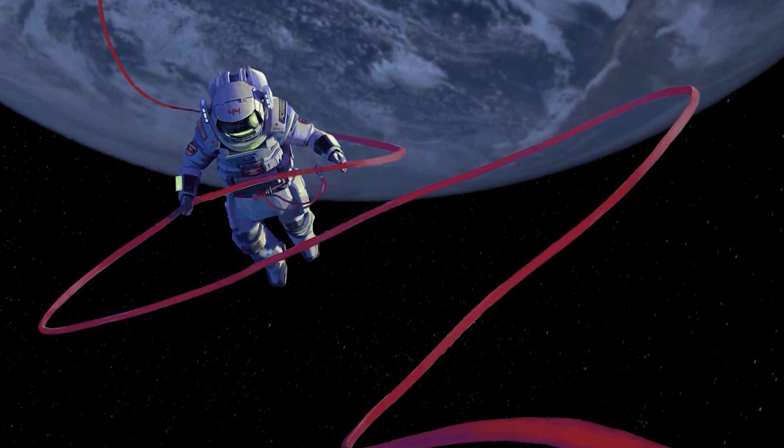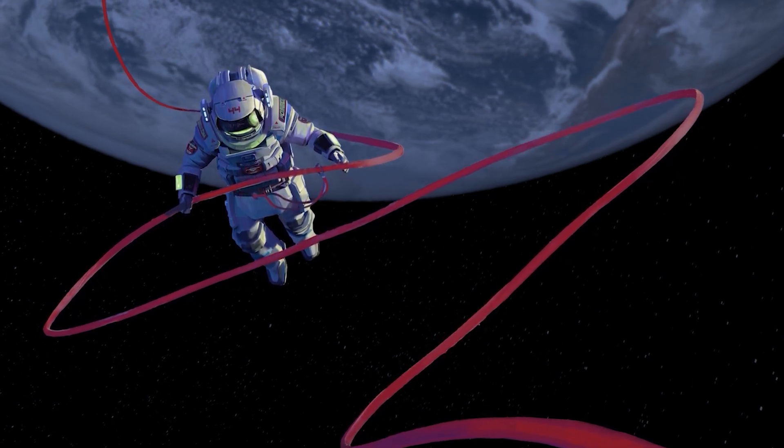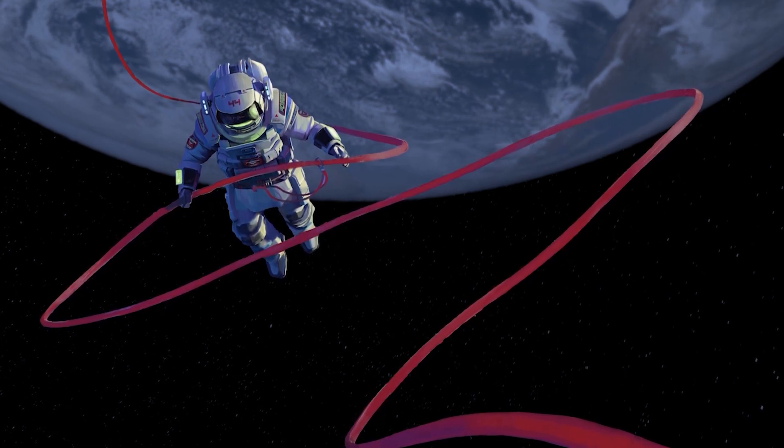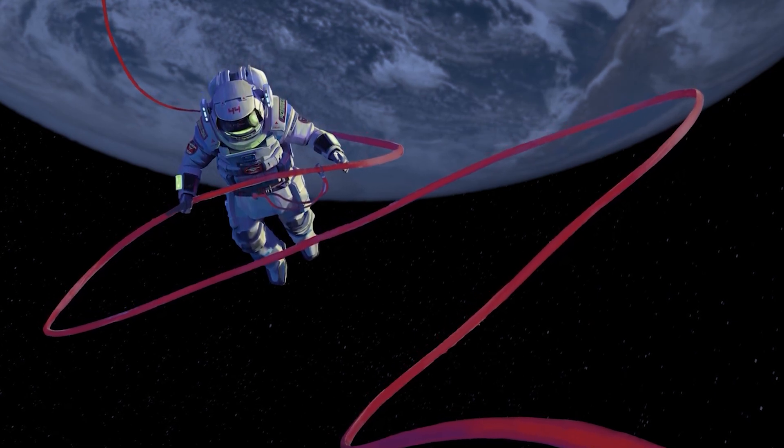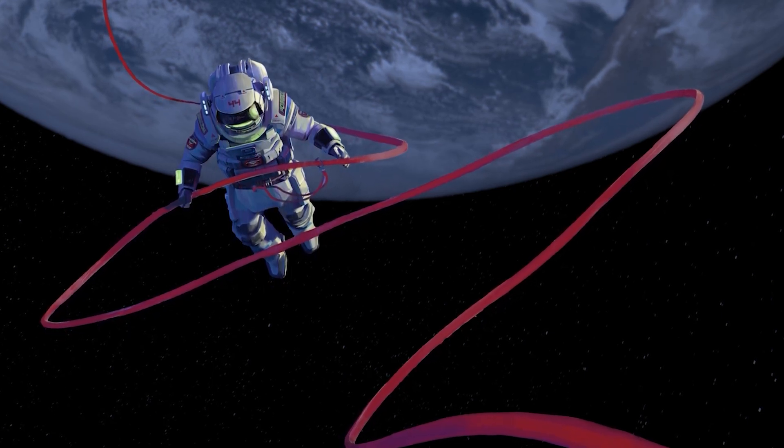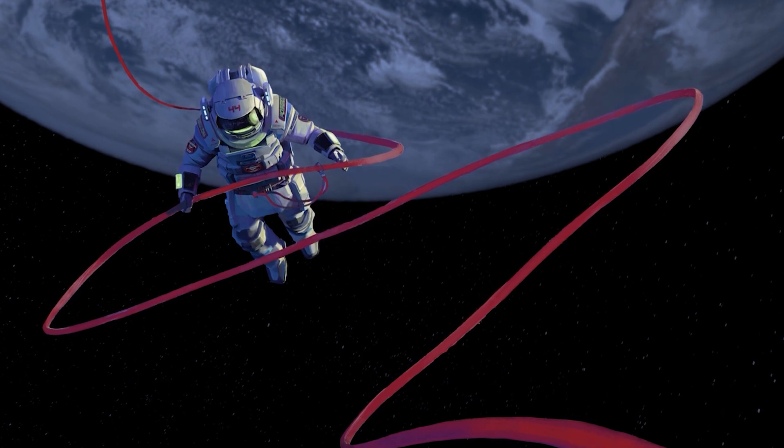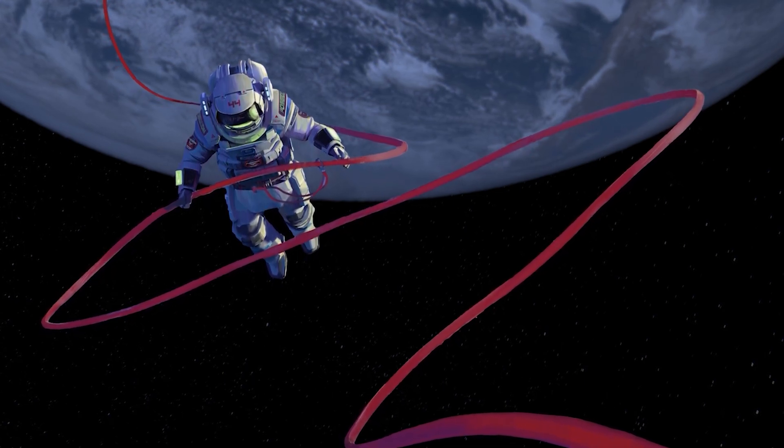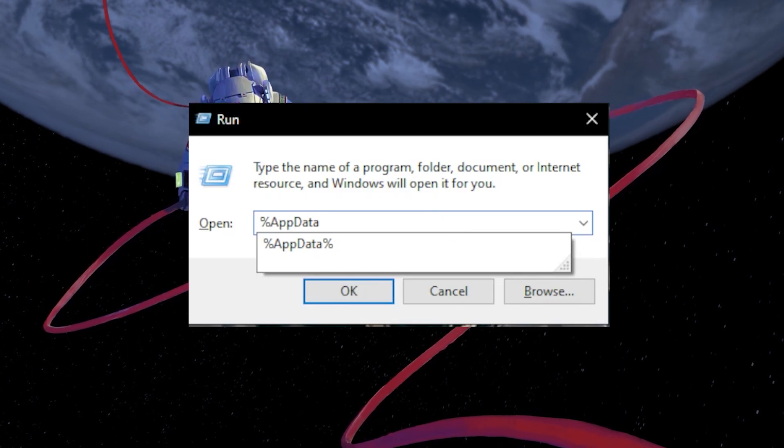Sometimes, corrupt or outdated cache files can cause issues with Roblox's authentication process, resulting in the error code zero. To resolve this, we need to clear the Roblox cache. Find the Roblox folder on your system and delete its content. To do so, search for %AppData% in your start menu search and hit Enter. Your File Explorer will open up.